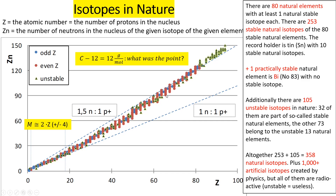We have seen we have much more isotopes than elements, so on average we have several isotopes per element. The record holder is element number 50 — tin — which contains as many as 10 stable isotopes. Unfortunately it also contains an 11th unstable isotope, which we should discuss later.